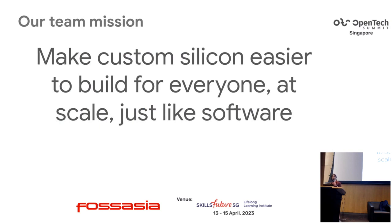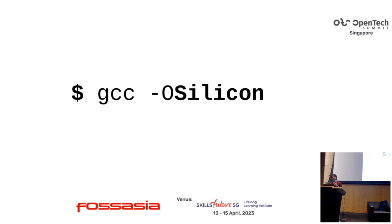The core team mission is to make custom silicon easier to build for everyone — at scale, just like software. Many of you are developers familiar with optimization flags you pass to your compiler. Sometimes you max out those optimization possibilities and there's nothing more you can do in software. Our vision is to help you take the next step and optimize in hardware. Usually the gap between a software product and a hardware product is pretty big, and we'd like to make it as easy as just changing a compiler flag. We're not there yet, but that's the vision.